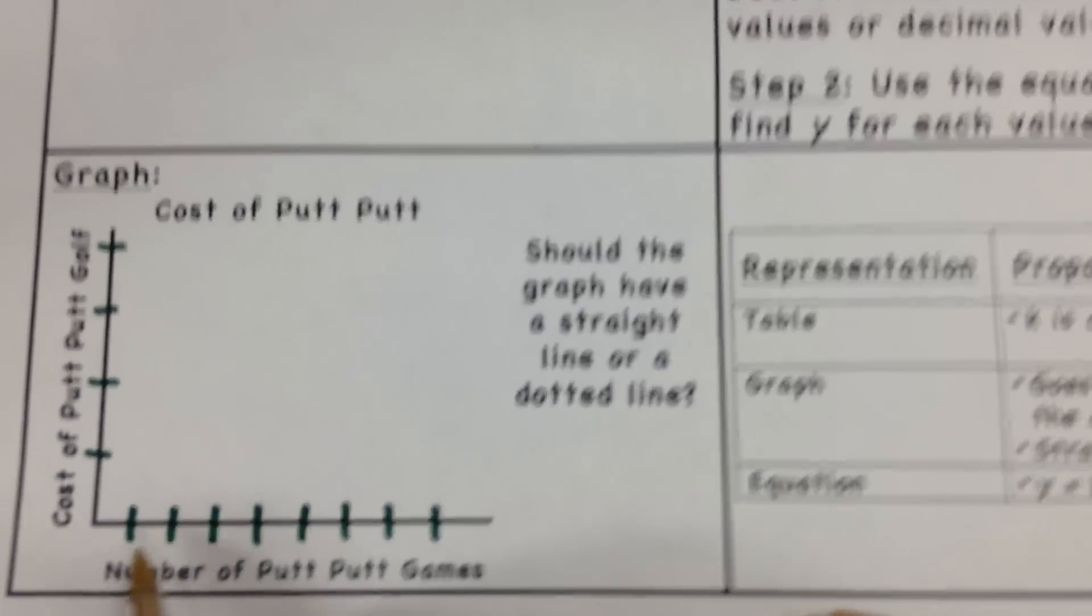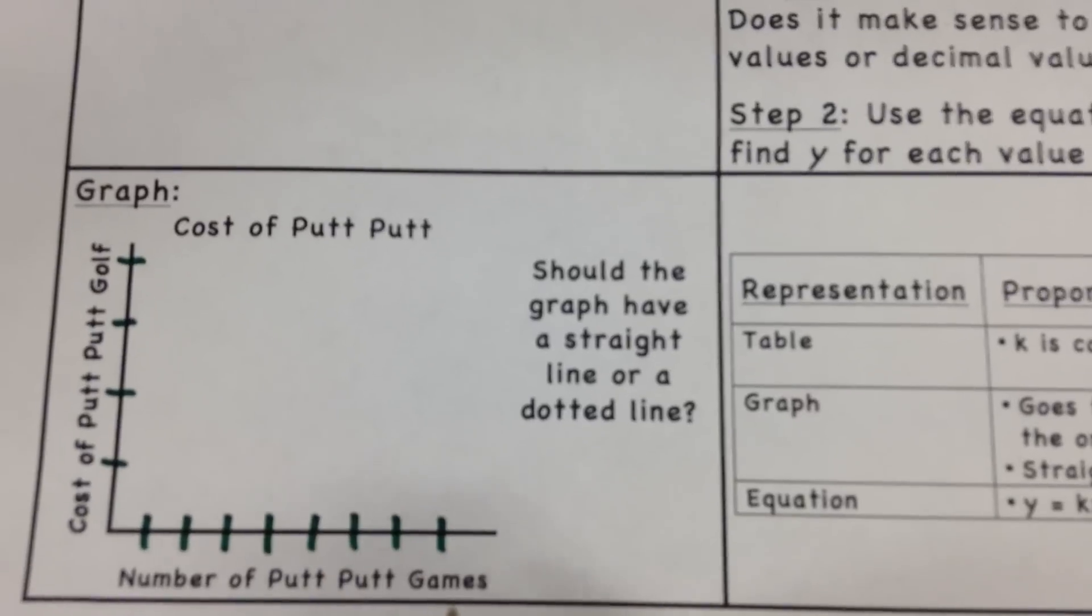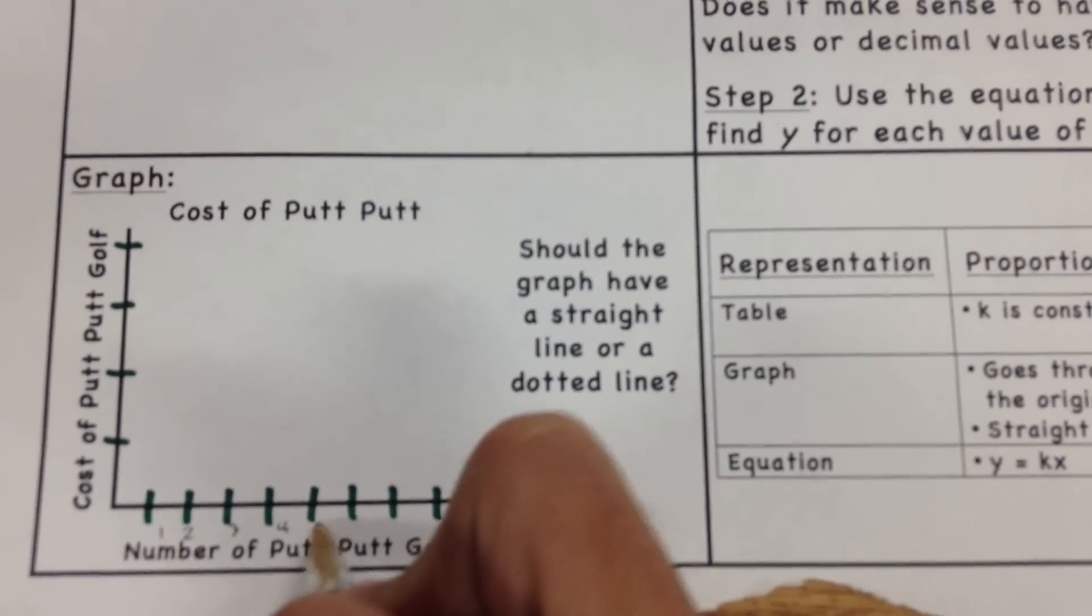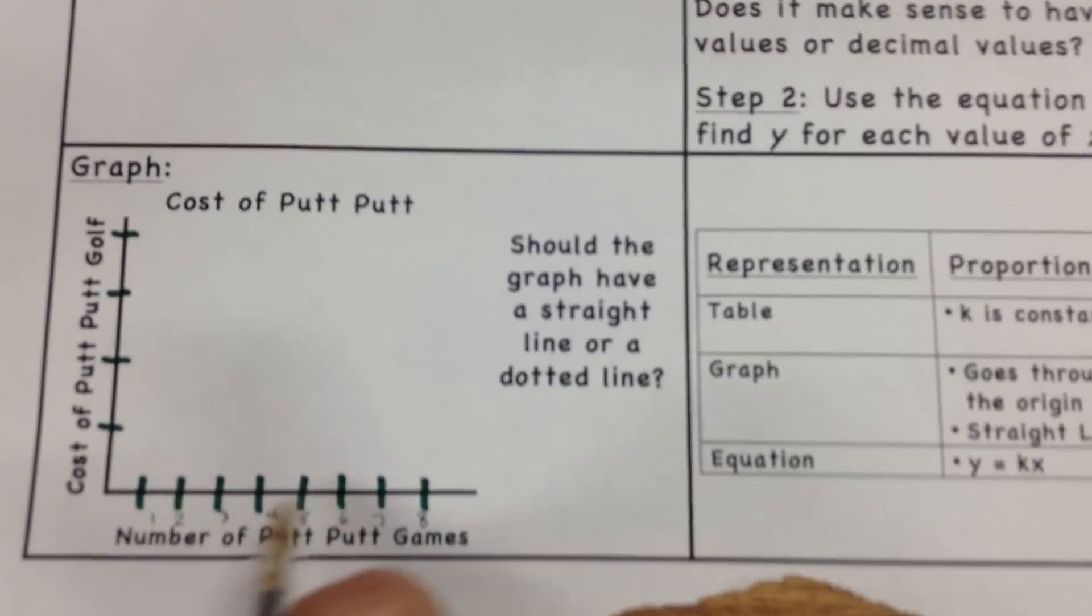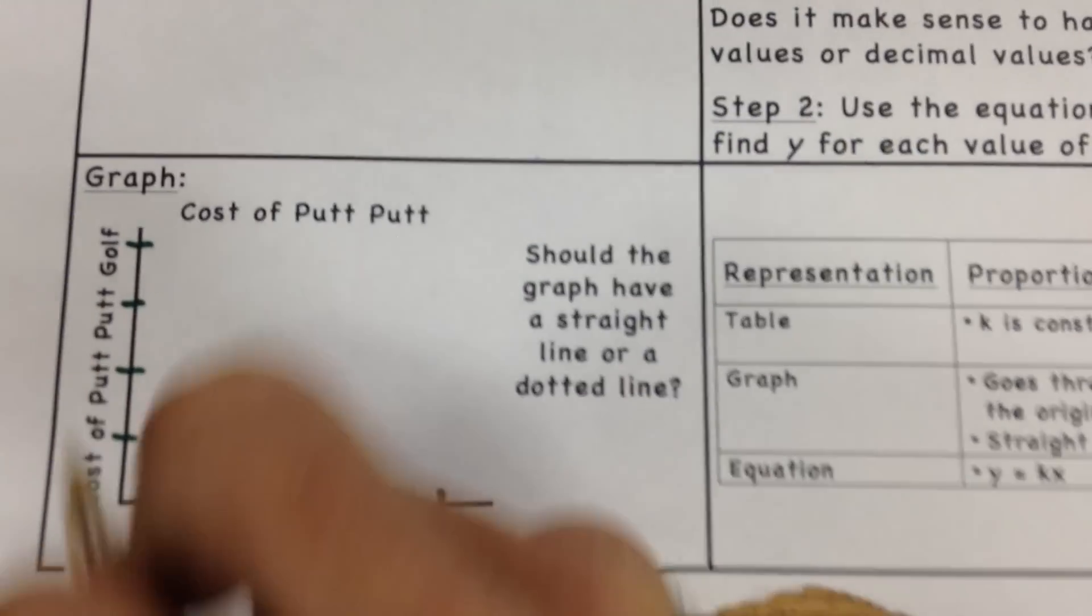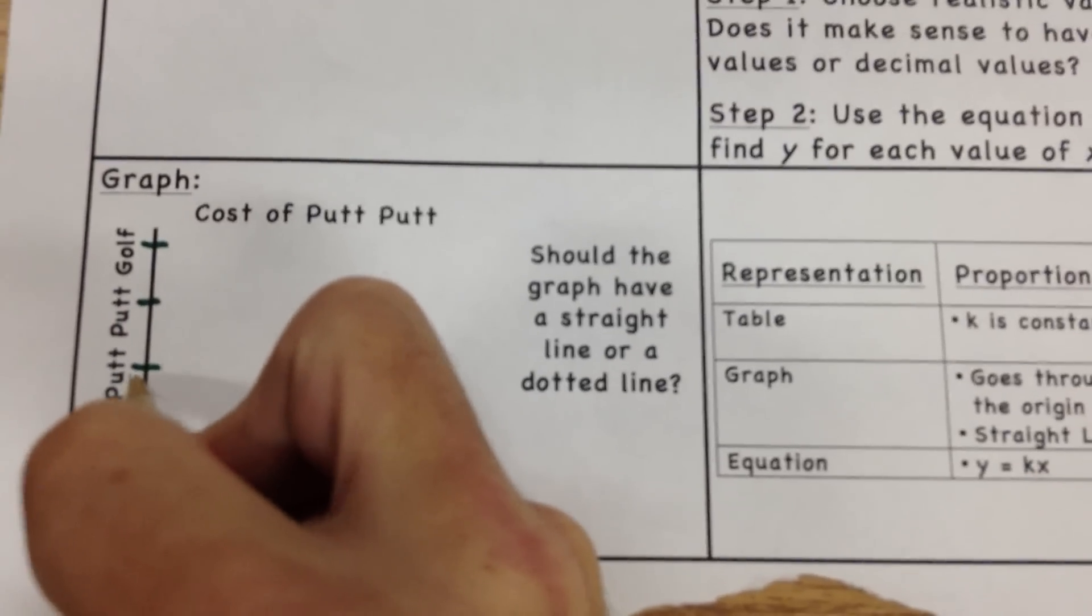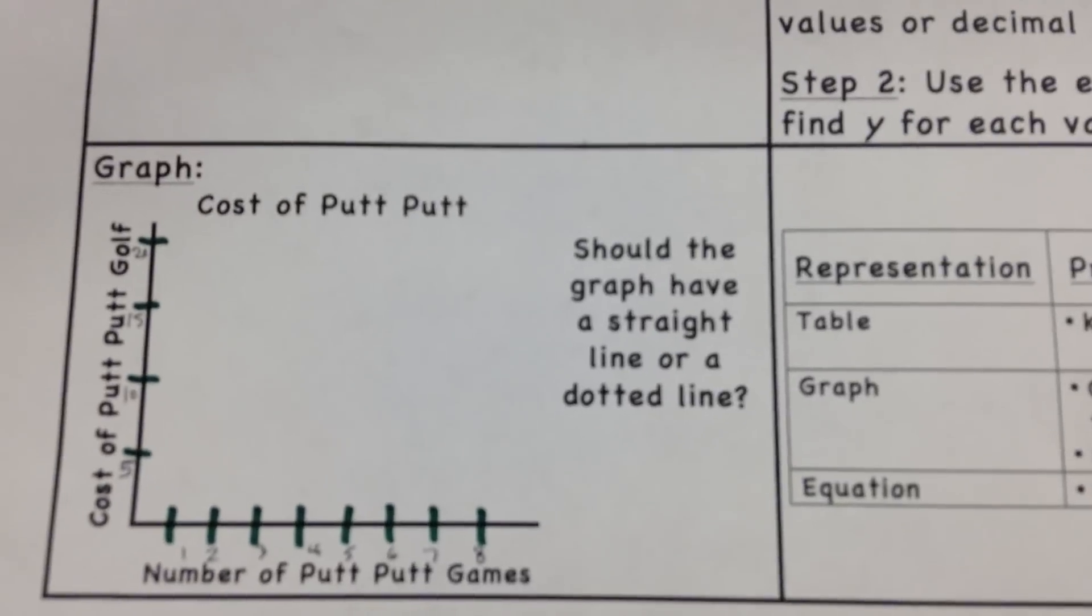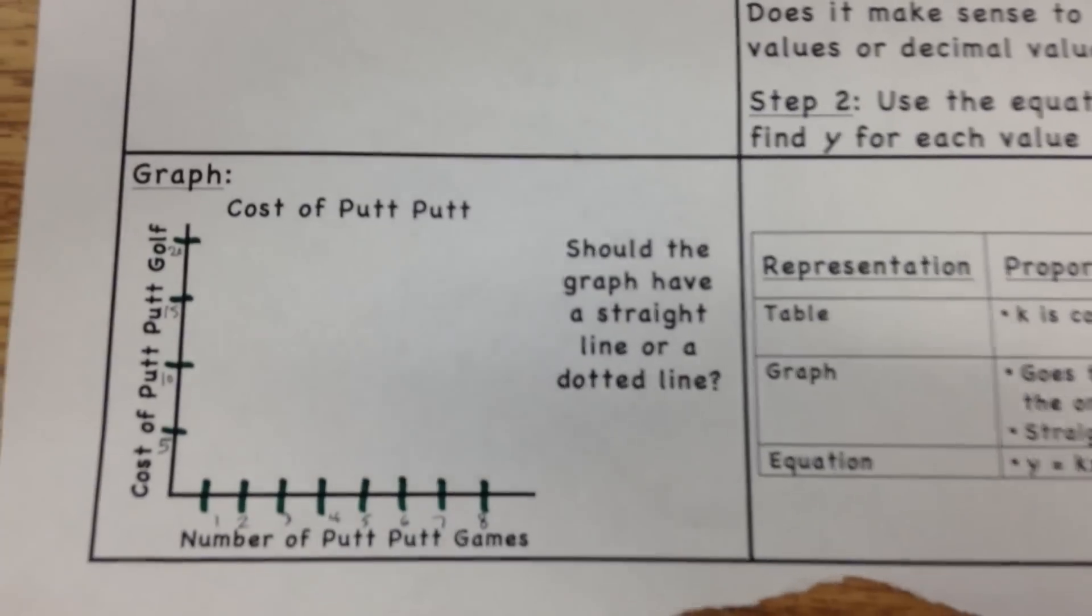So now we're going to come down here and graph these points. You might need to take a second, pause the video, and put some lines down here. These represent the number of games you played. So 1, 2, 3, 4, and that's as far as the graph will go, but you could go all the way to 8. Try to make them as evenly spaced apart as you can. Then up on the left side, we're going to do cost in dollars, and I'm going to go by 5. So 5, 10, 15, and 20. So once you have that done, we're going to start graphing these points.